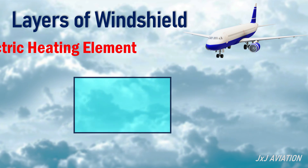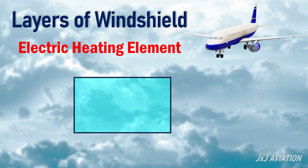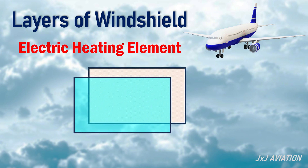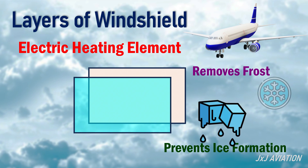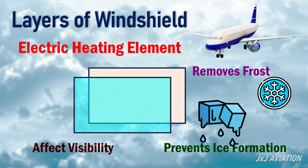The next layer is a thin electrical heating element. This prevents ice formation and removes frost. Ice or frost on the windshield will affect visibility.